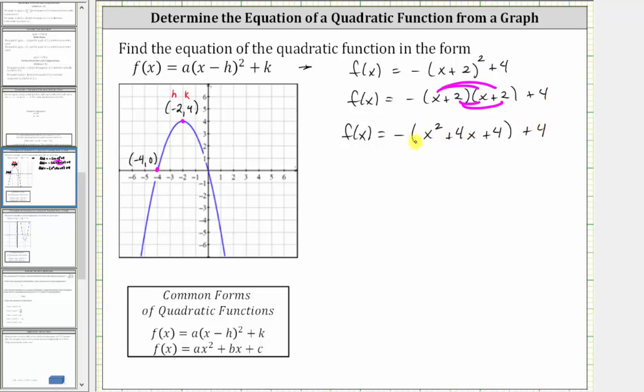And now to clear the parentheses here, we can distribute the negative, or if it's helpful, think of distributing a negative one, which gives us f(x) equals -x² - 4x - 4 + 4, and negative four plus four equals zero, giving us f(x) = -x² - 4x.